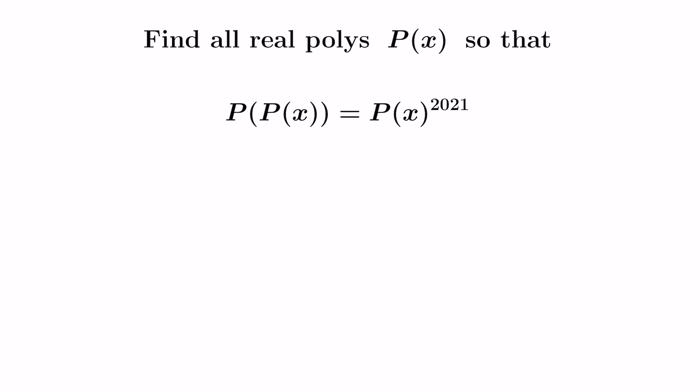Today we're going to talk about this really interesting problem. We're asked to find all real polynomials p of x, that means polynomials with real coefficients, so that p of p of x is actually equal to p of x raised to the 2021. Now the 2021 here is actually a red herring, meaning that you could replace it with any positive integer n, and you'll be able to find a solution to this problem using the same processes.